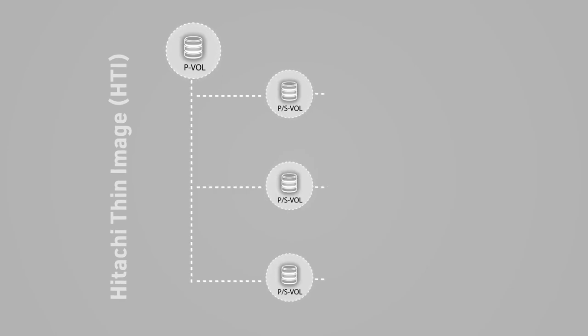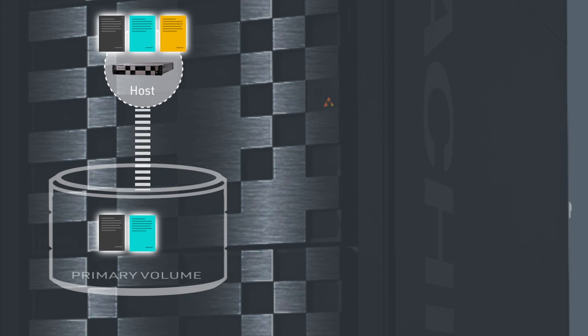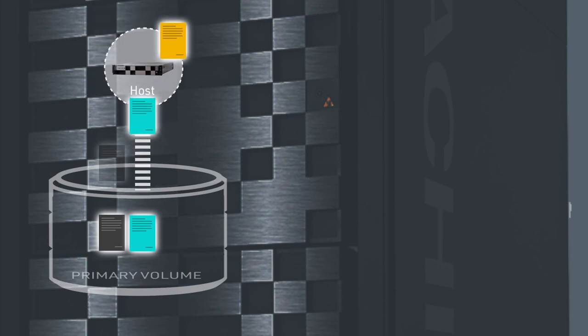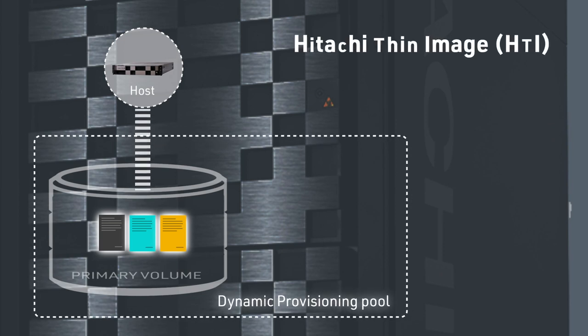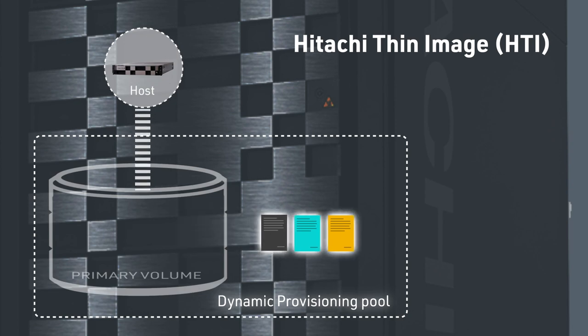Thin Image license capacity usage is not affected by the number of SVOLs per pair or the number of layers in a cascade configuration. When a snapshot is created in a Dynamic Provisioning Pool, Thin Image license usage increases by the total capacity of the Dynamic Provisioning Pool and does not change with the number of snapshots. Thin Image license usage becomes zero only after all snapshots are deleted. When Thin Image pairs are created on Universal Replicator PVOLs or SVOLs, Universal Replicator license usage remains unaffected on the primary and secondary storage systems.